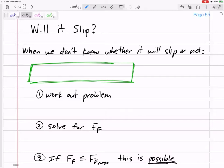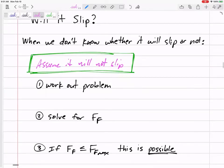Then that might be one of those 'will it slip' type problems. So I like to start by assuming it will not slip. I work out the problem assuming it will not slip. If it is not slipping, I set the force of friction to F_F.